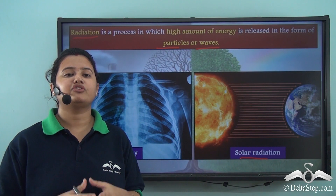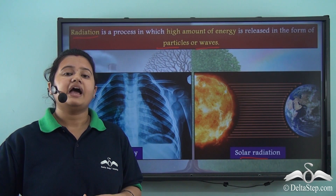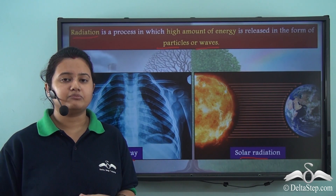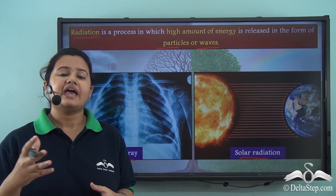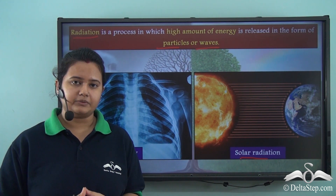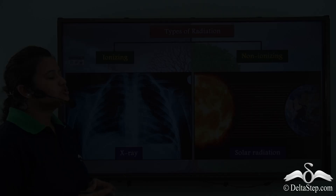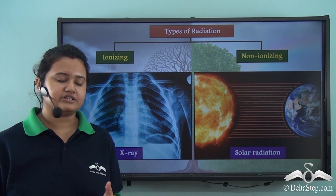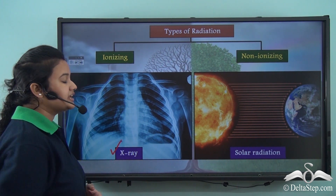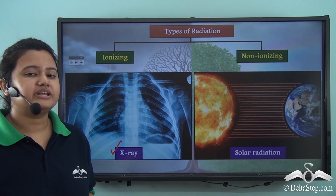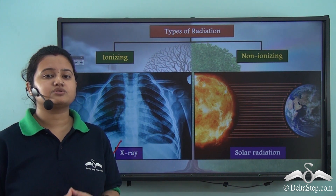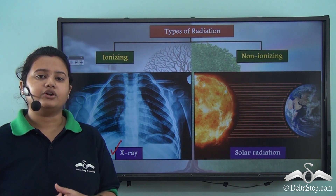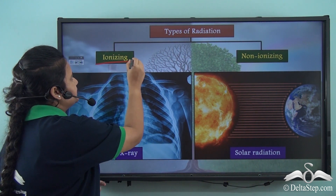Solar radiation coming from the sun is less harmful and is not able to remove the electrons from atoms and molecules present in living tissues or in any other materials of the environment. Since x-rays can remove electrons present in atoms or molecules of living tissues or any other materials in the environment, they are known as ionizing radiation.